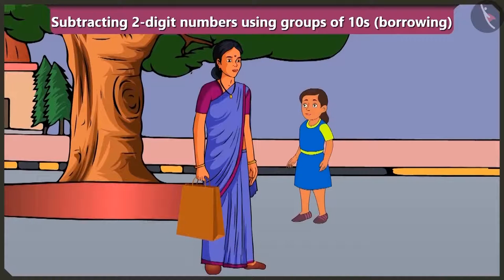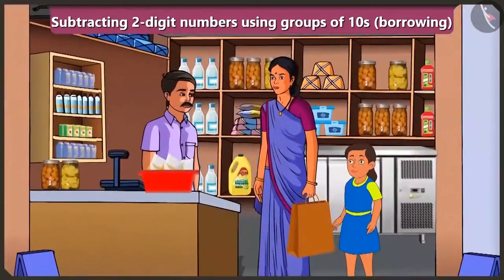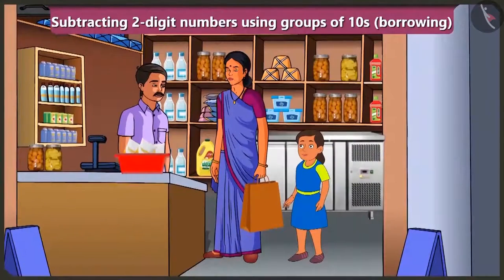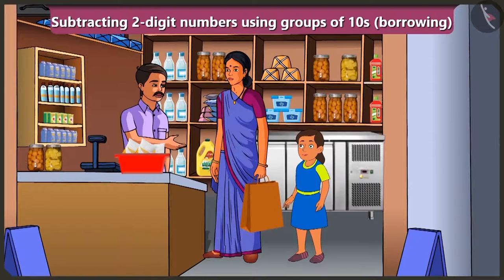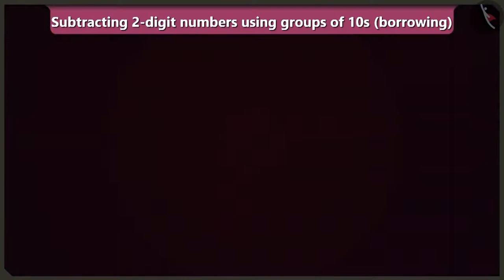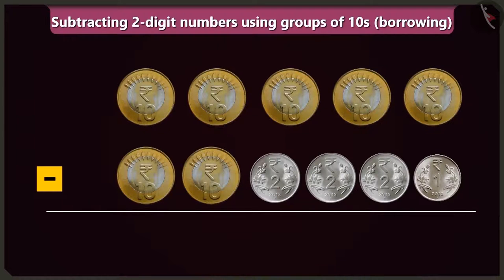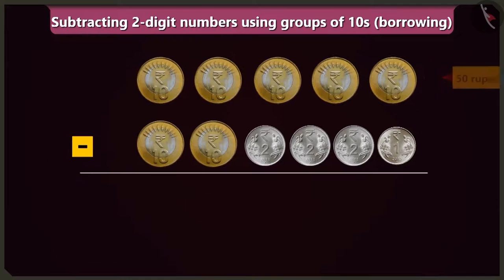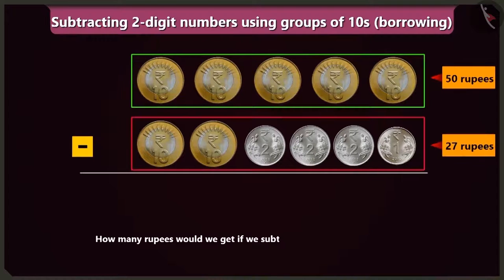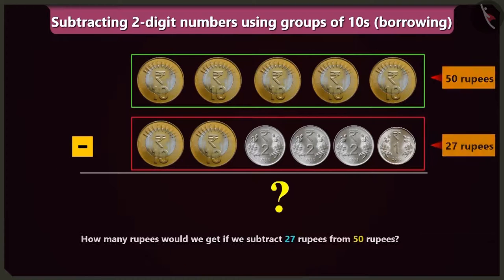Come on, let us now go to buy milk. Brother, what is the price of one packet of milk? One packet is twenty-seven rupees. Take this, fifty rupees. Mummy, uncle said to give twenty-seven rupees for the milk. Then why are you giving him fifty rupees? Bubbly, uncle will subtract twenty-seven rupees from fifty rupees and would give the rest of the money back. How many rupees would it be if we subtract twenty-seven rupees from fifty rupees?